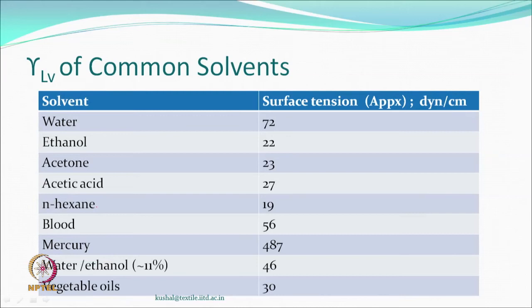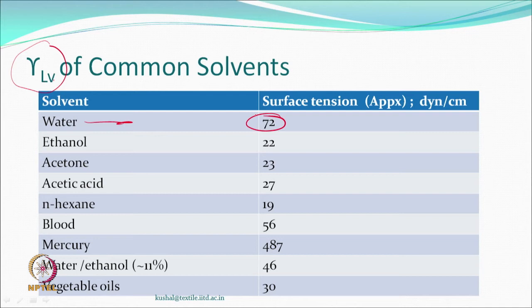Looking at surface tension of liquids — which is the liquid-vapor interface — water has a value of about 72 dynes per centimeter at approximately 25°C. This value can change with temperature. Mercury, by contrast, likes itself so much that drops just roll off any surface — it has very high surface tension and does not like the vapor at all.